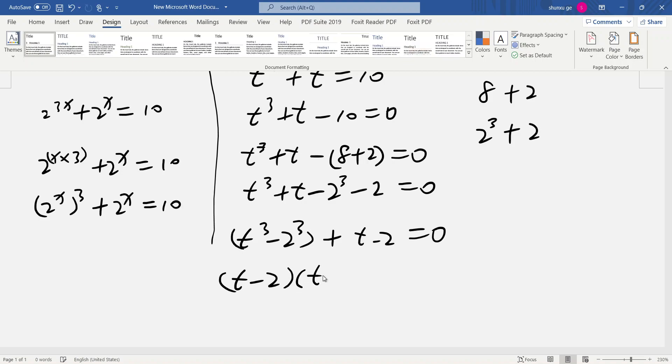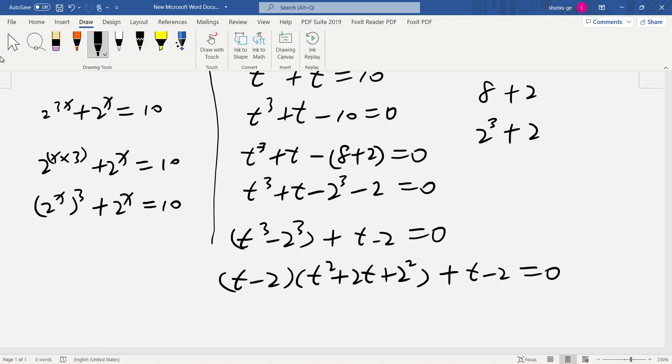So 1 plus (t-2) times (t^2 + 2t + 2^2) plus (t-2) equals 0. Common factor here, common factor t-2.